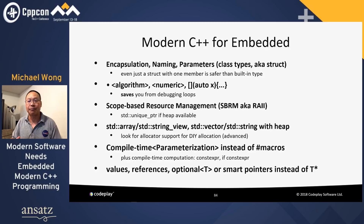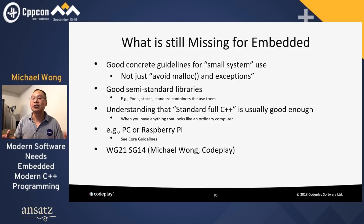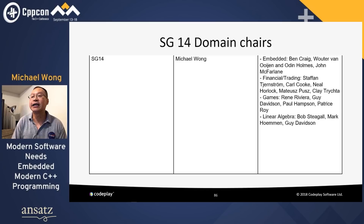What's still missing for embedded? We need good concrete guidelines for small systems use — not just 'avoid malloc and exceptions.' We need good semi-standard libraries less heap-dependent: pool stacks, standard containers. Standard full C++ is usually good enough for anything that looks like an ordinary computer like a PC or Raspberry Pi. We need more people from embedded to help with SG14. SG14 covers embedded with Ben Craig, Wooten, Odin, Wooter, and John McFarlane; finance and trading; games; and linear algebra.